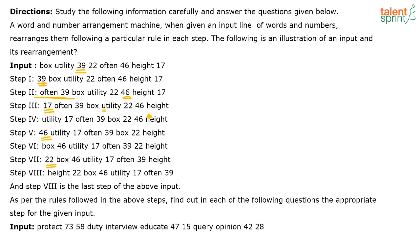After arranging odd numbers, the next vowel-starting word is taken. I have already used 'often,' so the next word starting with a vowel is 'U' — that is 'utility.' Once the vowel words are done, I look at words starting with consonants and take the one that comes first alphabetically. 'Box' comes first alphabetically, then 'height' next. That is the complete pattern followed.